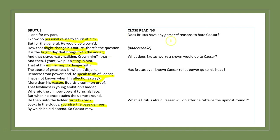Does Brutus have any personal reason to hate Caesar? No — 'no personal cause to spurn at him.' What does Brutus worry a crown would do to Caesar? It could put a sting in him and let him do dangerous things to the people — he can do whatever he wants if he's king. Has Brutus ever known Caesar to let power go to his head? No — 'to speak truth of Caesar, I have not known when his affection swayed more than his reasons.' And what is Brutus afraid Caesar will do after he attains his utmost round? He will turn his back on everyone who's helped him get that far.